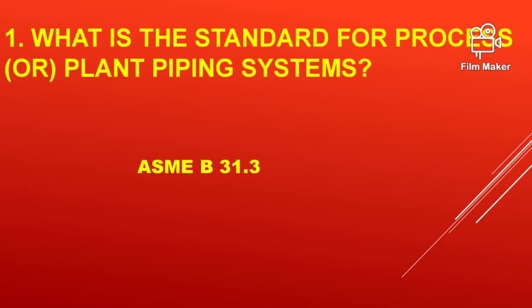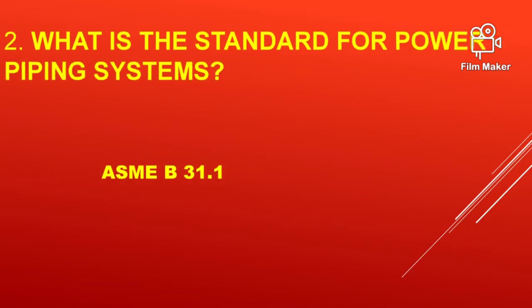What is the standard for process or plant piping systems? That is ASME B31.3. What is the standard for power piping systems? That is ASME B31.1.